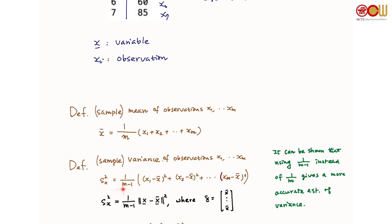It may seem a little bit weird that we use the factor 1 over n minus 1 instead of 1 over m. The reason is that it can be shown that using such a factor gives a more accurate estimate of variance when x1 to xm are observations of a random variable with a certain variance. We can also write this sample variance as the norm squared of x minus x-bar divided by n minus 1.